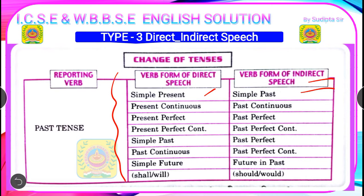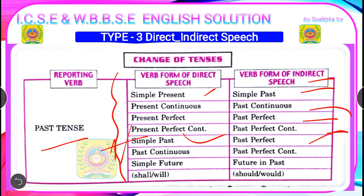Continuing the tense change list when the reporting verb is in past tense: present continuous → past continuous; present perfect → past perfect; present perfect continuous → past perfect continuous; simple past → past perfect; past continuous → past perfect continuous; simple future → future in the past (would); and 'shall' → 'would.'